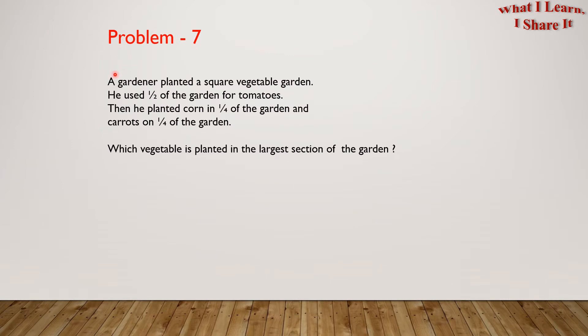Problem 7. A gardener planted a square vegetable garden. He used one-half of the garden for tomatoes. Then he planted corn in one-fourth of the garden and carrots on one-fourth of the garden. Which vegetable is planted in the largest section of the garden?